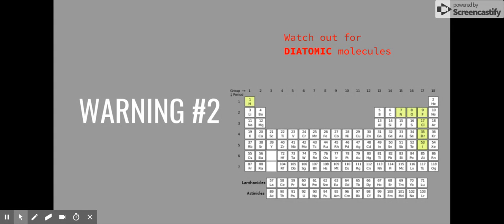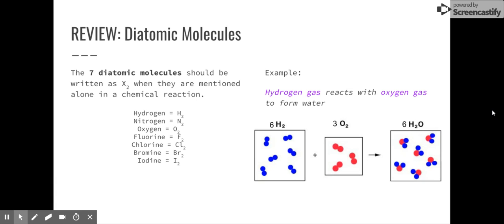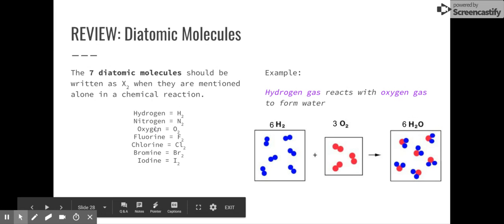Warning number two, watch out for diatomic molecules. Remember, there are special seven molecules or special atoms or elements that can never be alone. They should be written like this. So hydrogen, nitrogen, oxygen, fluorine, chlorine, bromine, and iodine. These are diatomic. But remember, that only happens when they are alone in a chemical reaction.